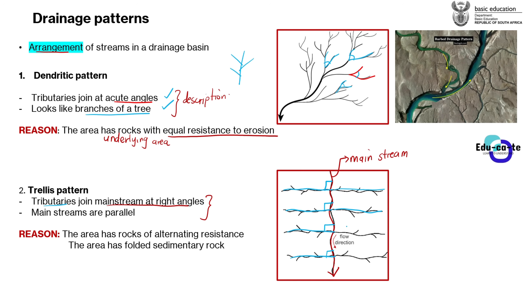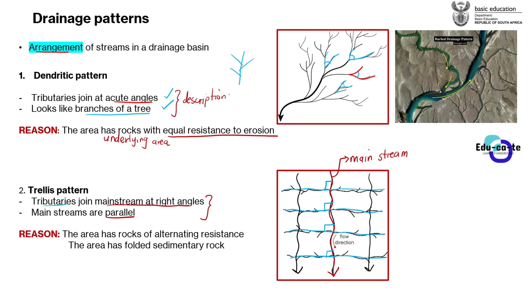In the trellis pattern, streams flow towards the mainstream and join at angles of 90 degrees. Another feature of the trellis pattern is that the mainstreams are parallel to one another — going in the same direction but never meeting. When two things are parallel, they are in the same orientation but never meet, similar to parallel lines in mathematics.